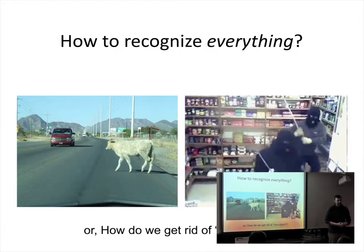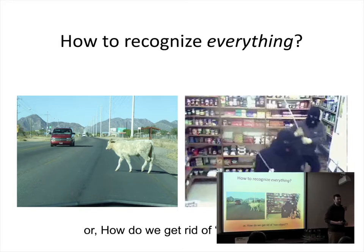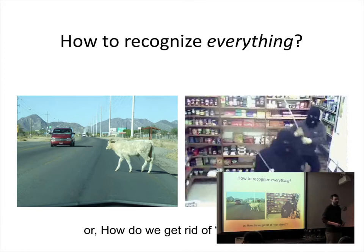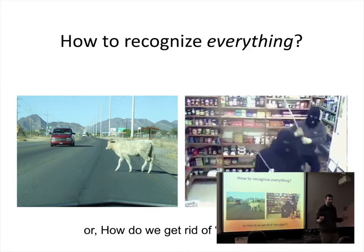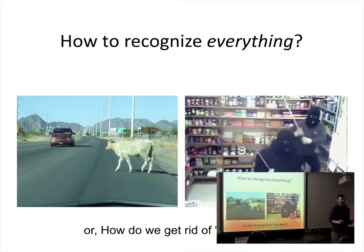The question I'm interested in is how we can recognize everything. That's a different question than how do you recognize a hundred or a thousand categories, because it requires that we think about objects in a different way — in a way that allows us to generalize to new categories, to new things not in our current vocabulary or training set. Another way to express this is: how do we get rid of the non-object, so that nothing causes a complete failure of the recognition system?